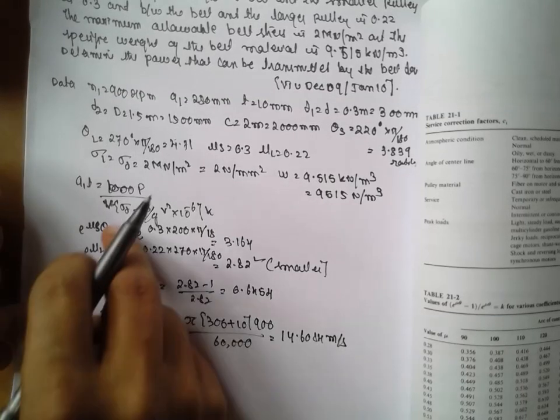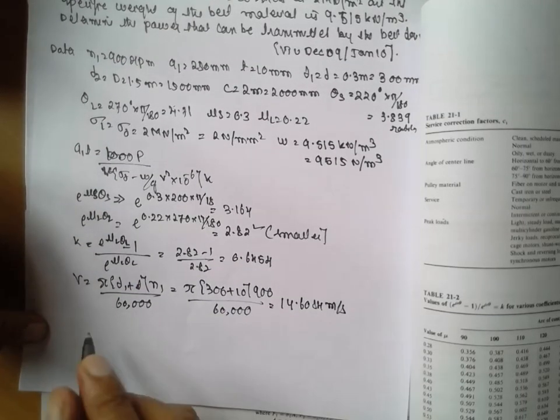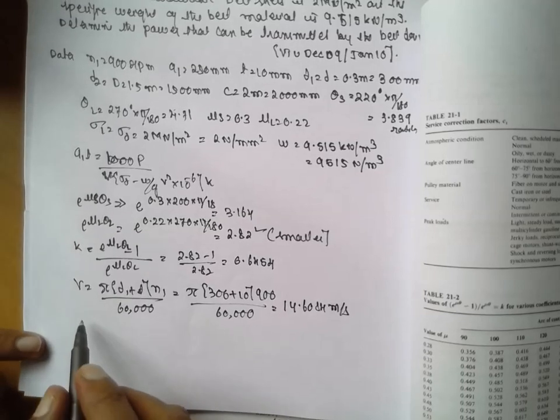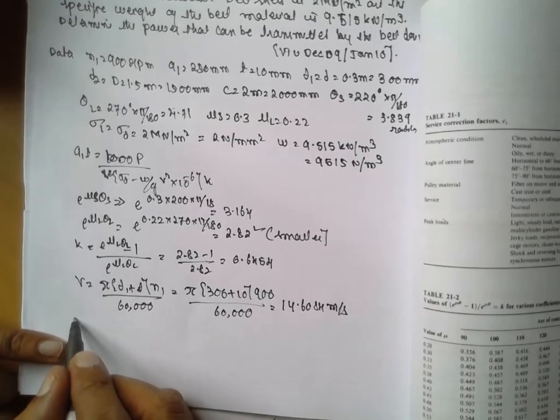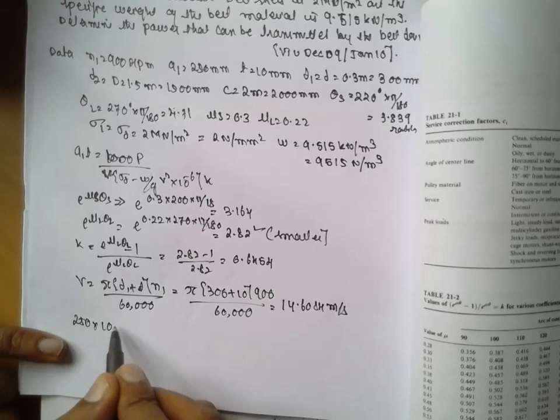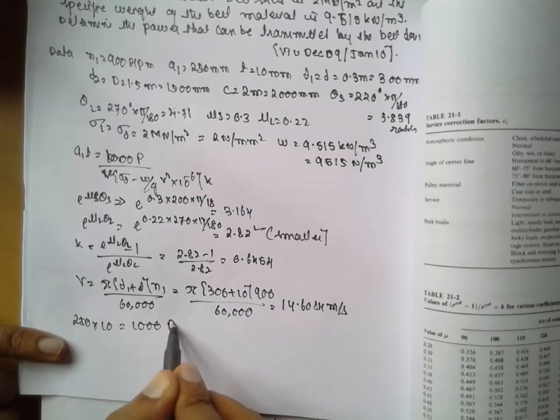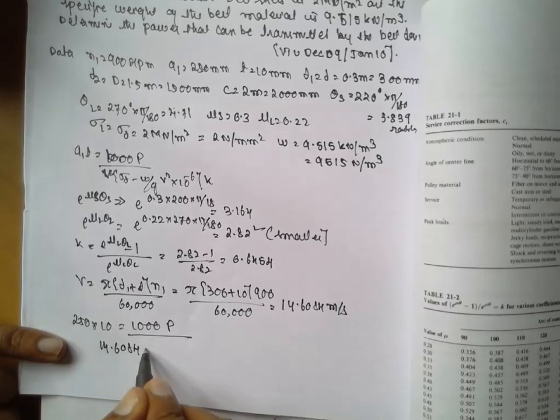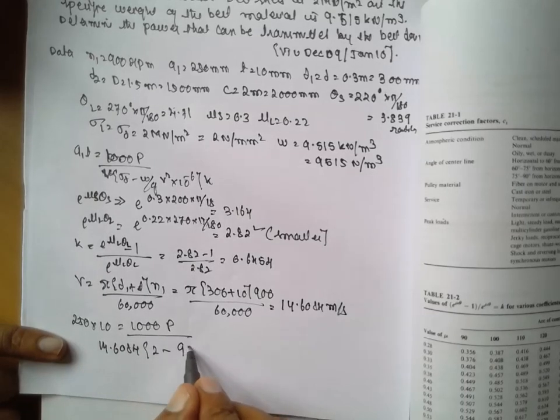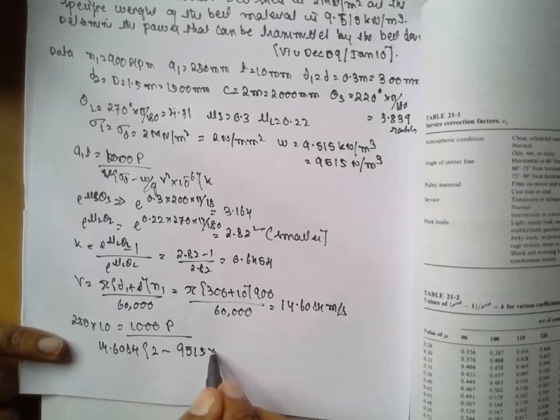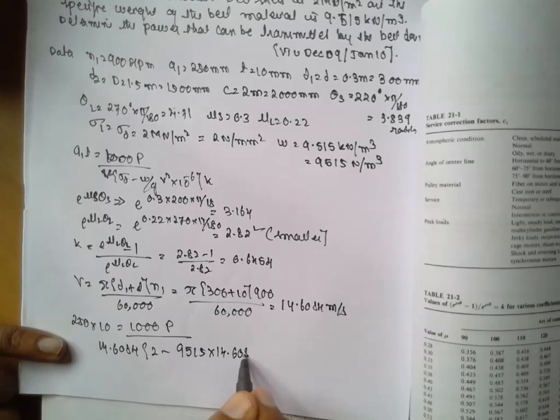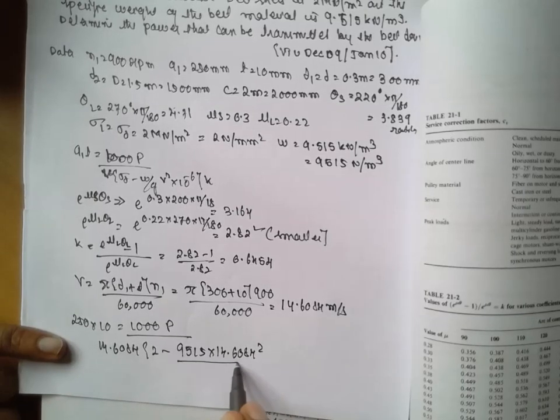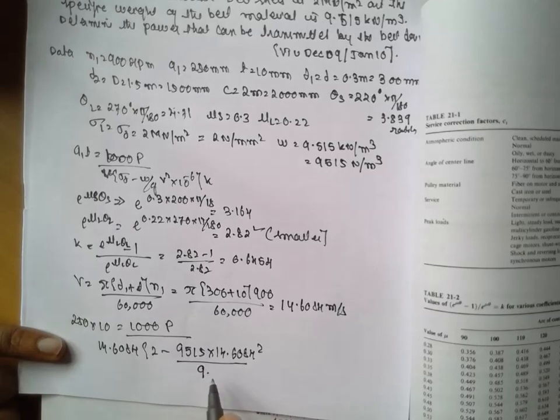Now substitute in this equation. In this equation you will get the answer. 250 into 10 equals 1000P divided by 14.6084, 2 minus 9515 into 14.6084 whole square divided by 9.81.